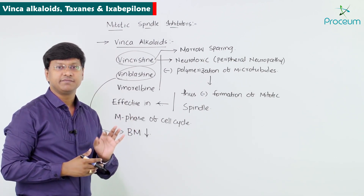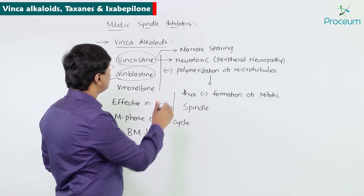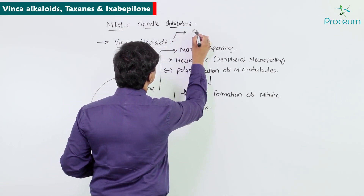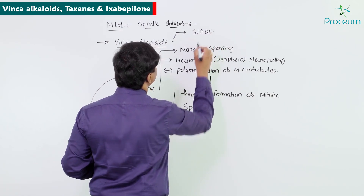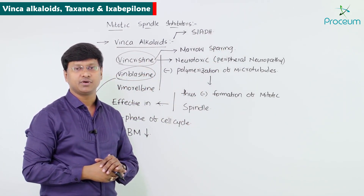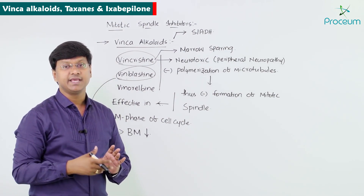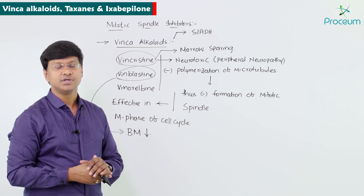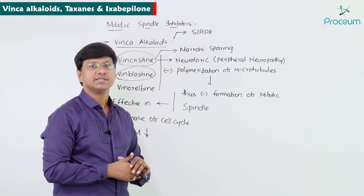An important adverse effect associated with all vinca alkaloids is SIADH — syndrome of inappropriate antidiuretic hormone — a condition where there is excessive secretion of antidiuretic hormone from the posterior pituitary.